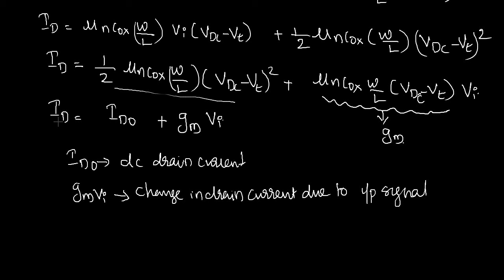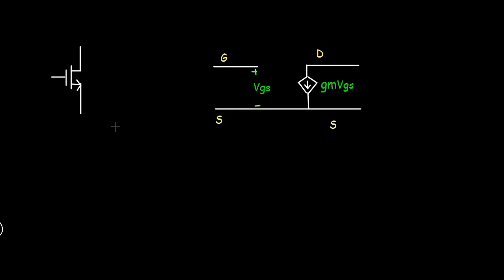We can draw the small signal model of our MOSFET. For small signal analysis we replace our MOSFET using this small signal model. In the model, the gate terminal is open, VGS is the input voltage, and the drain current ID is linearly proportional to VGS: ID = Gm · VGS. This is the most simple small signal model of MOSFET, where we are not considering the channel length modulation effect.